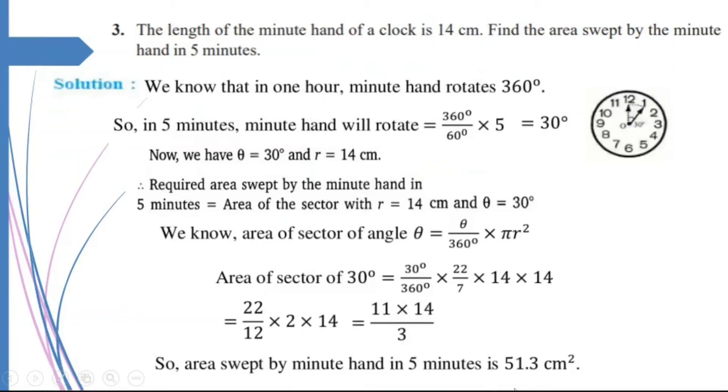So, I am left with 22 upon 12 into 2 into 14, which is equal to 11 into 14 upon 3, which simplifies to give me the answer, 51.3 centimeters squared. So, the area swept by the minute hand in 5 minutes is equal to 51.3 centimeters squared.